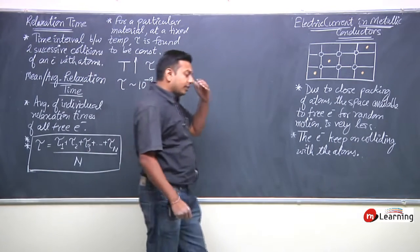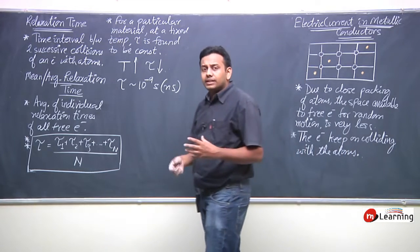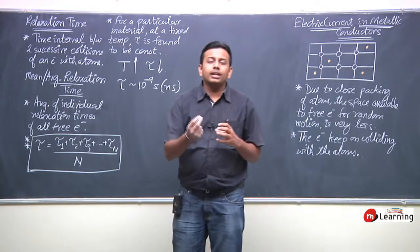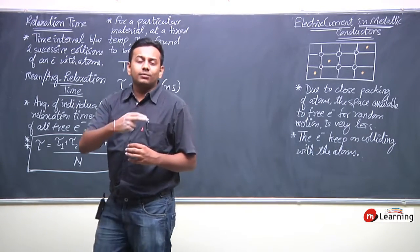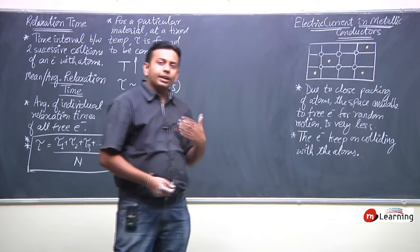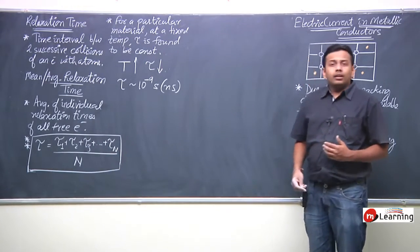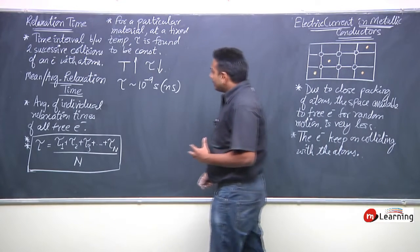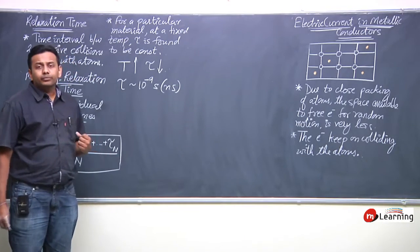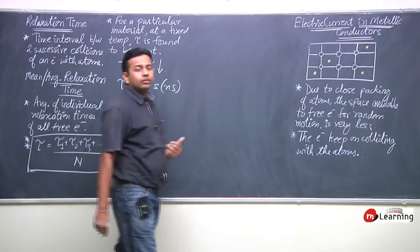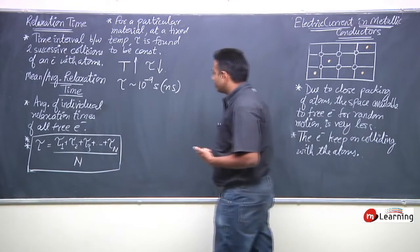Electrons collide very quickly because they have a very small area — as soon as one collision happens, they hit another atom. This is why tau's value practically is found to be very small — of the order of nanoseconds.